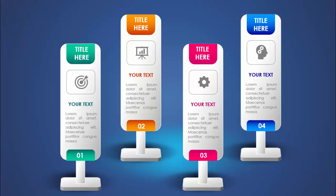In today's tutorial I am going to show you how to create four banner options infographic slide in PowerPoint. I've created this banner with a stand, where you can add your detailed text, the title, the icons, and some text, with the option number here. Option two has a different gradient fill, different icons, and a shadow effect. This is option three and option four.